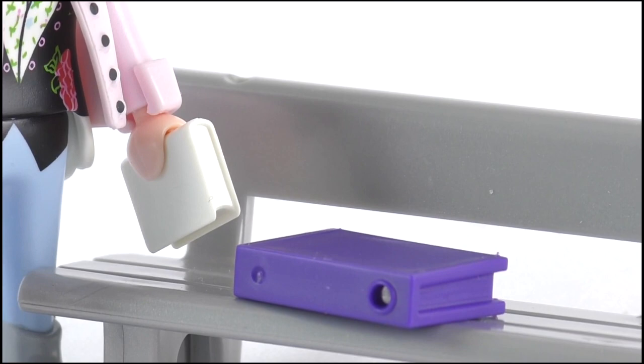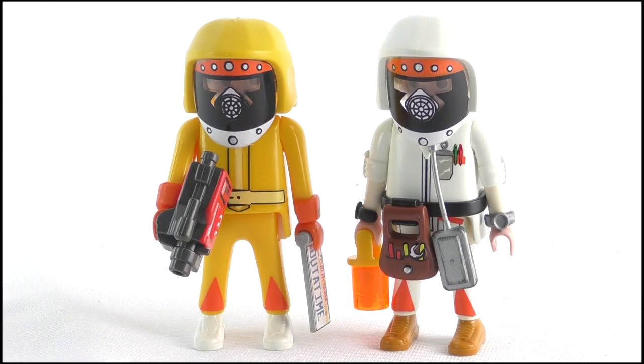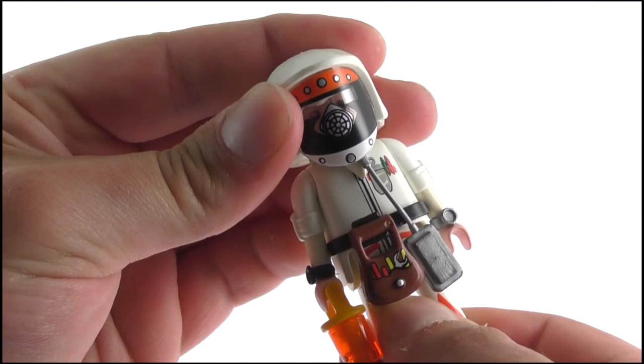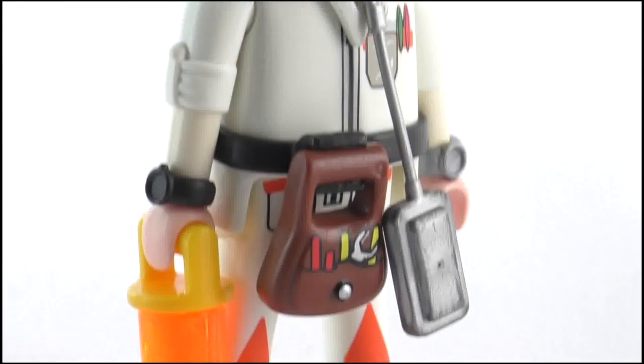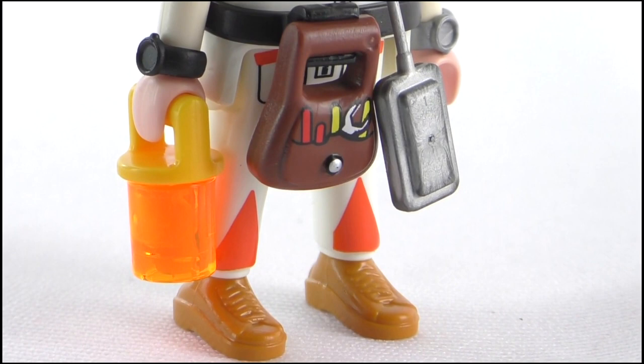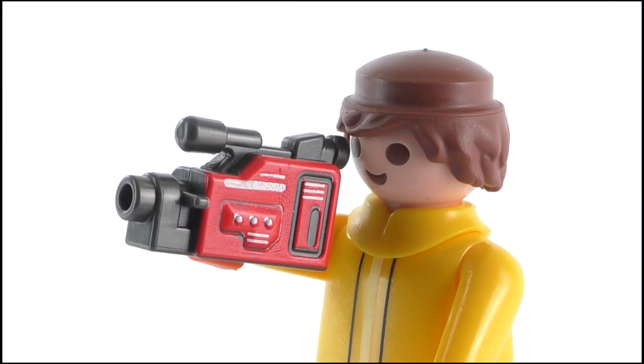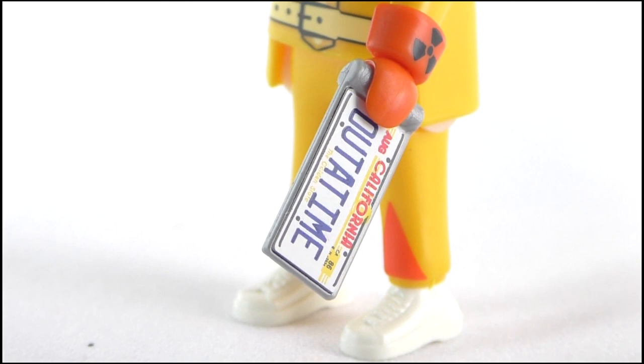We also get both Doc and Marty in their radiation suits, which feature removable face shields, as well as a wealth of accessories, including Doc's tool bag, his stopwatch, and a plutonium rod. Marty offers the video camera, the out-of-time license plate, which is again similar to that 2015 barcode version, the science fiction book the kid at Peabody's farm has, and the hairdryer from his belt when he wakes up George.